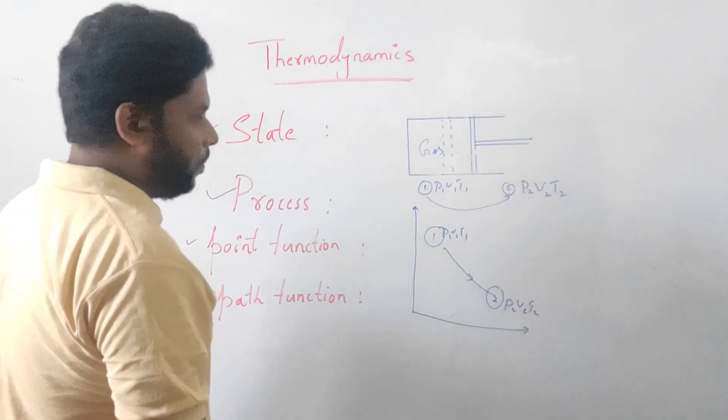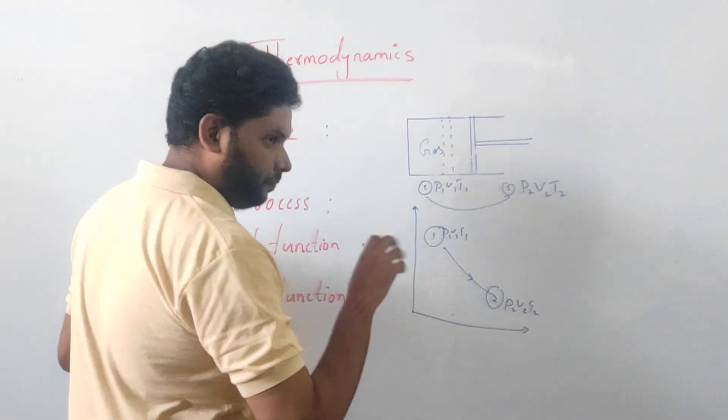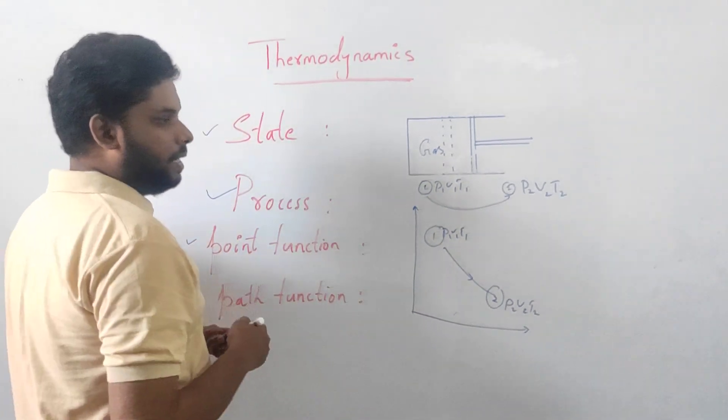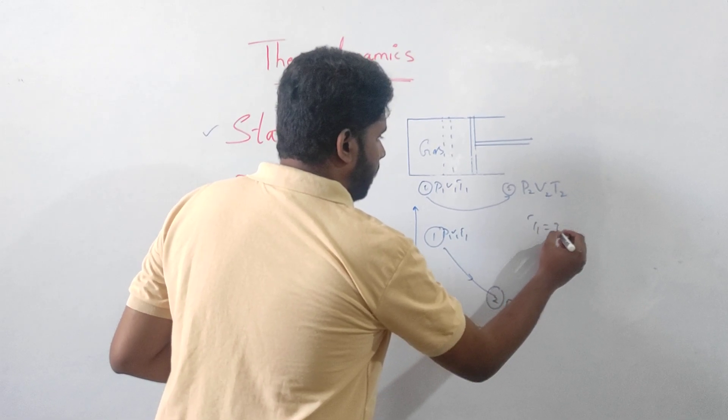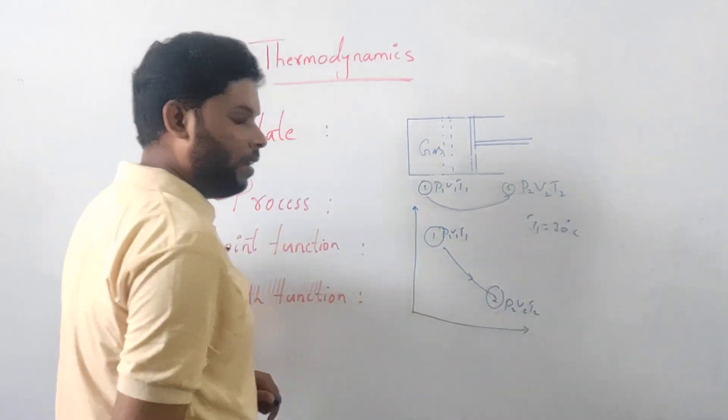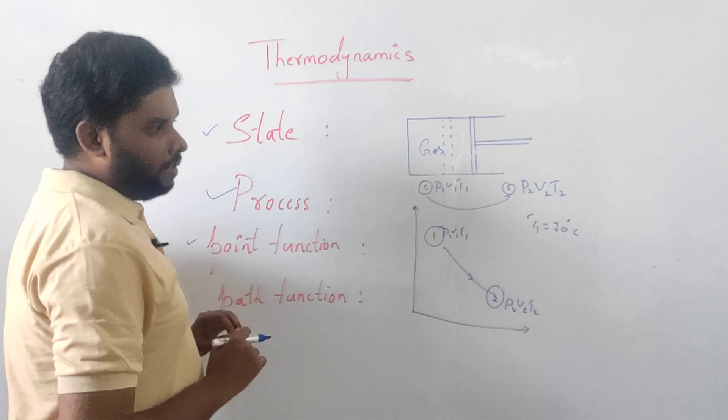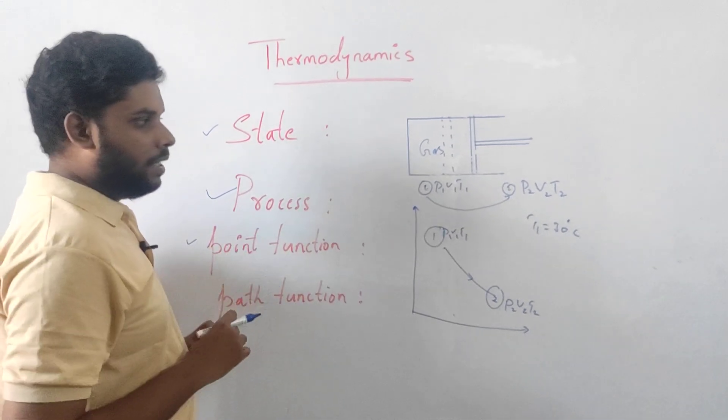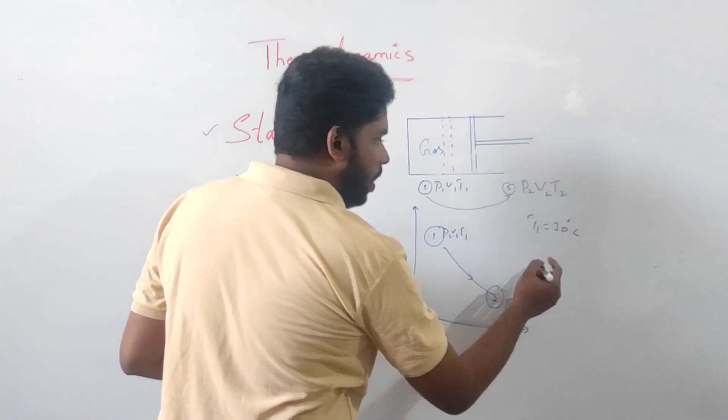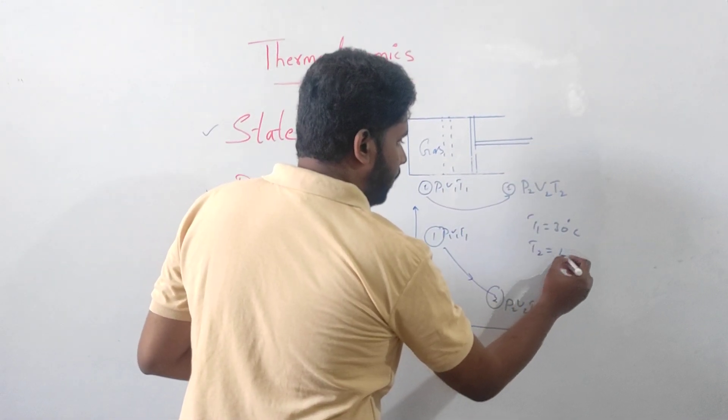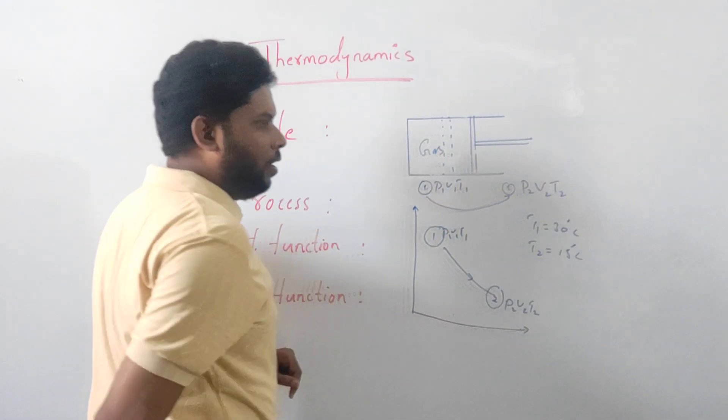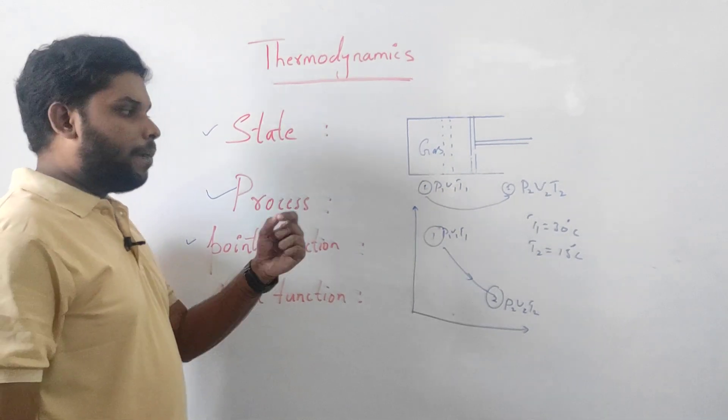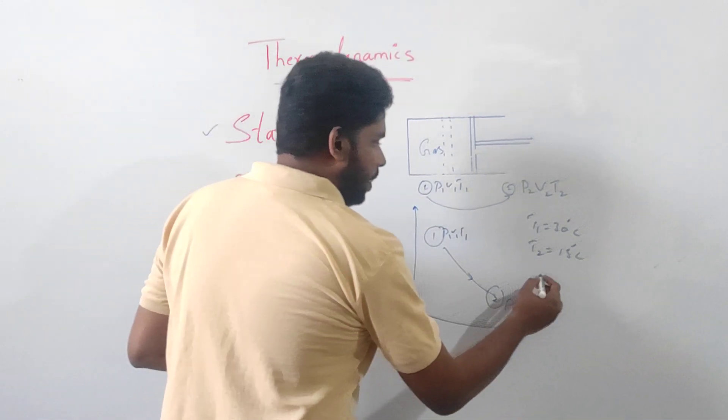For example, this room here - the temperature is 30 degrees centigrade. Now I have put air conditioning in this room. After air conditioning, the temperature drops to 15 degrees centigrade. Now I ask you, what is the change in temperature?